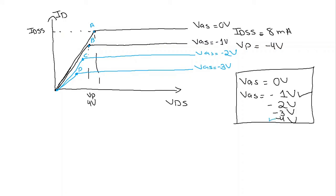When VGS is equal to minus 4 volt, we will have 0 milliampere current. We know that our pinch-off voltage Vp is also minus 4 volt, so from the start we will reach saturation immediately. When we keep on increasing VDS, we will still have 0 ampere current, so this curve will be along the X axis for the case VGS equal to minus 4 volt, that is, for the case VGS equal to Vp.